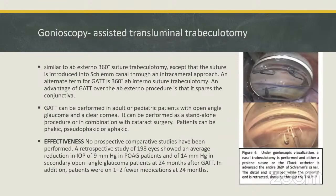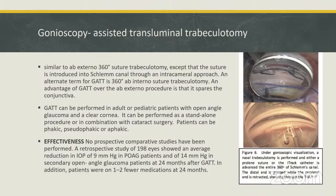Gonioscopy-assisted transluminal trabeculotomy (GATT) is similar to ab-external 360-degree suture trabeculotomy, except the suture is introduced into Schlemm's canal through an intracameral approach. An alternate term is 360-degree ab-interno suture trabeculotomy. An advantage over the ab-external procedure is that it spares the conjunctiva. It can be performed in adult or pediatric patients with open-angle glaucoma and a clear cornea, as a standalone or combined with phaco. A retrospective study of 198 eyes showed an average IOP reduction of about 9 mmHg in primary open-angle glaucoma and 14 mmHg in secondary open-angle glaucoma patients at 24 months.